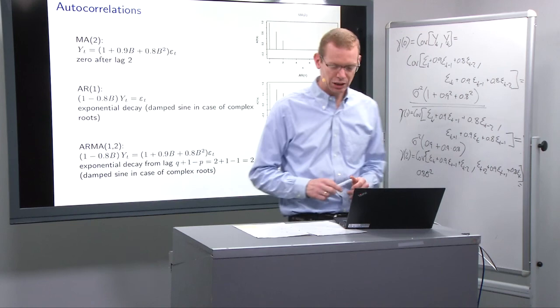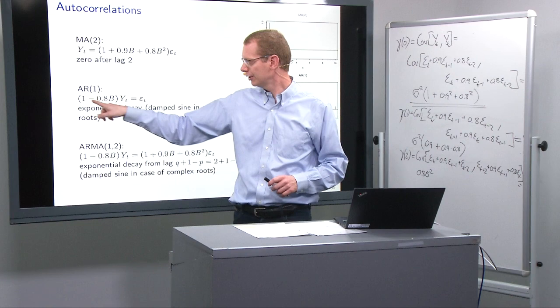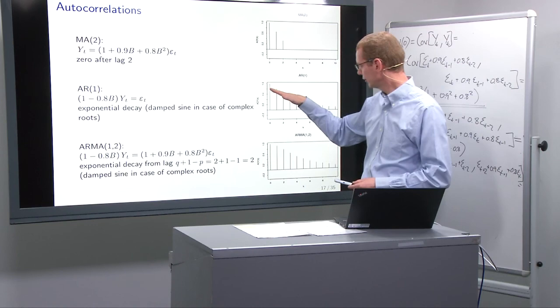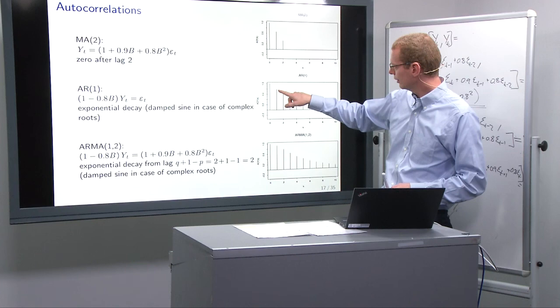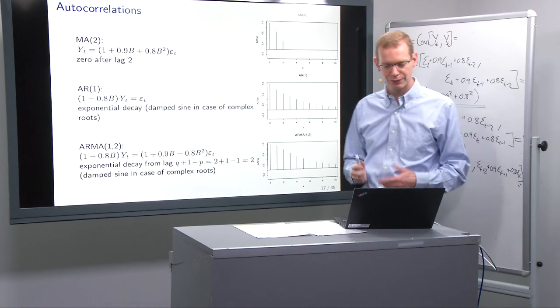If you go for the autoregressive model of order one, say in this example with coefficient minus 0.8, then we have an exponential decay in the autocorrelation function. And what you get is 0.8, 0.8 square, 0.8 cubed, and so forth all the way down. I leave you to do the math.